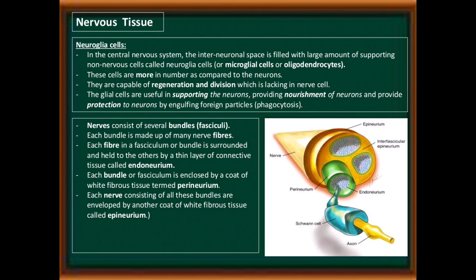Neuroglial cells: in the central nervous system, the interneuronal space is filled with a large amount of supporting non-nervous cells called neuroglial cells, microglial cells, or oligodendrocytes. These cells are more in number compared to neurons. They are capable of regeneration and division, which is lacking in nerve cells. Glial cells are useful in supporting and nourishing the neurons and provide protection by engulfing foreign particles through phagocytosis.